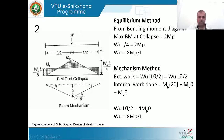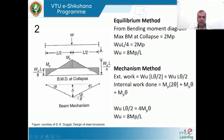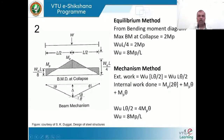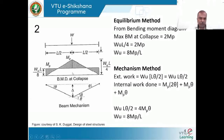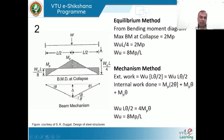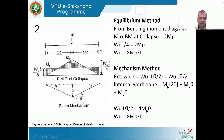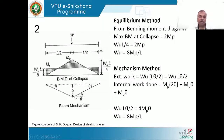In the negative bending moment profile, the maximum value is mp at the ends, while all other sections have moments less than mp. This confirms mp is the ultimate value at which plastic hinges form at those critical locations. The plastic moment capacity mp at both ends and at the center are all equal.